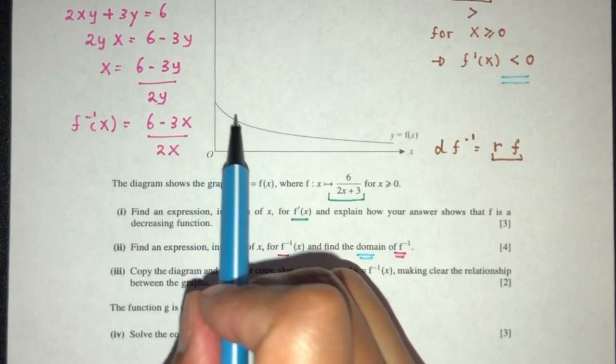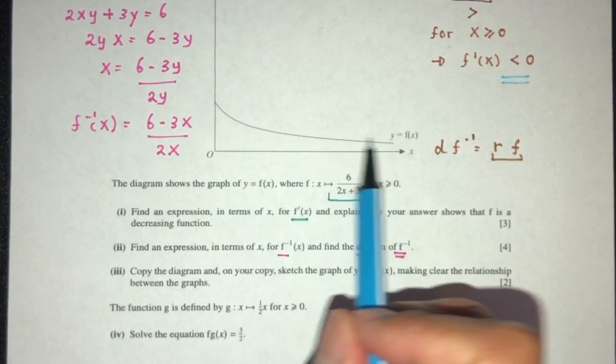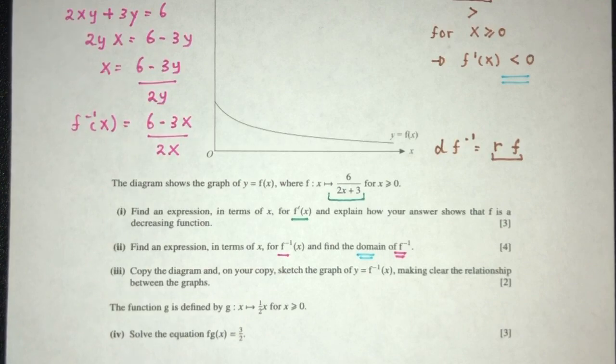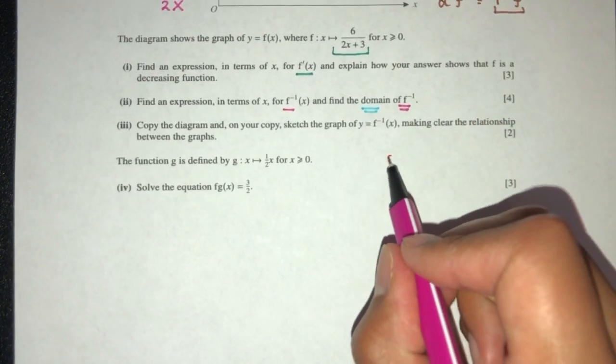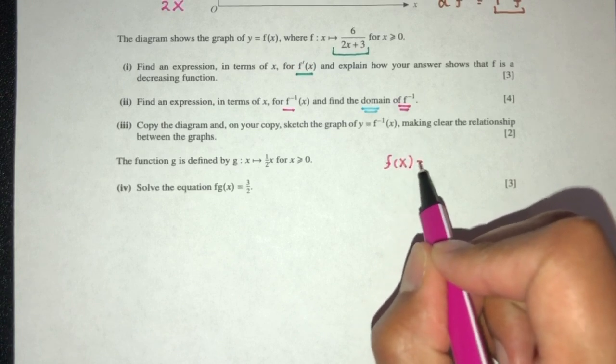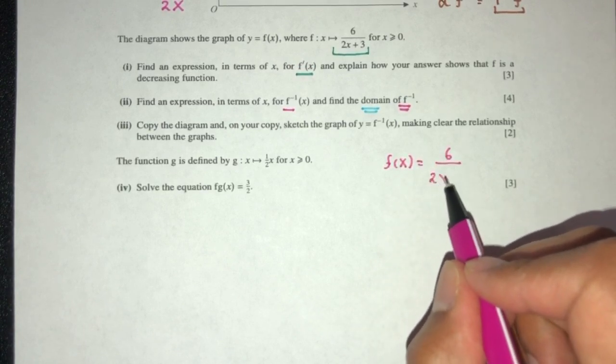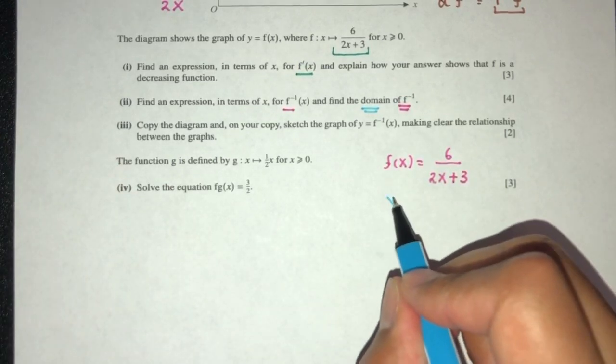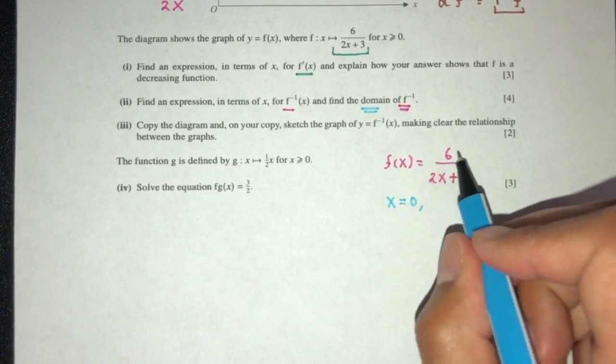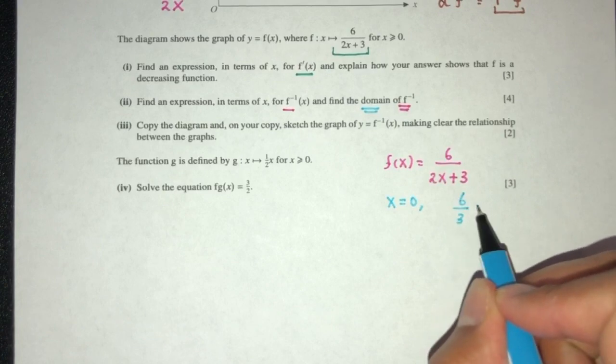And as it goes, it approaches a value. The equation of f of x is 6 over (2x plus 3). When x is 0, the value is 6 over 3, which equals 2. As you can see, this has to be 2 right here.